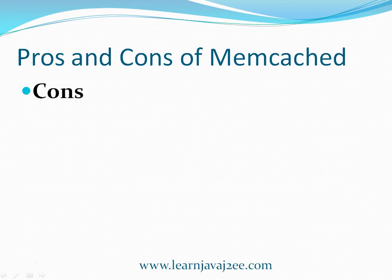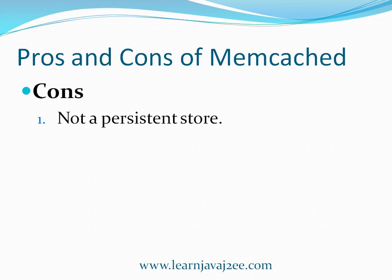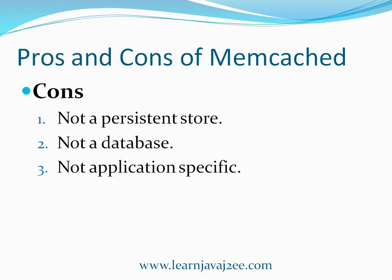Now coming to the cons of Memcached: first and very straightforwardly, this is not a persistent store. You cannot use Memcached as a permanent database like MySQL, Oracle, or any other database. Memcached is just a key-value pair non-persistent store — it can lose data as soon as the Memcached server is restarted. So you should never be using Memcached as a persistent store or as a database. Also, it is not specific to any application, it doesn't have any schema, and you can connect it with any application where you want to store data as key-value pairs.